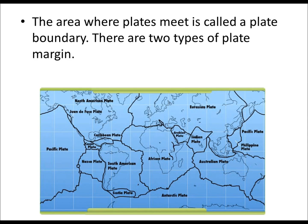The area where plates meet is called a plate boundary. There are two types of these margins. You can see these black lines — these are the boundaries or margins between plates.